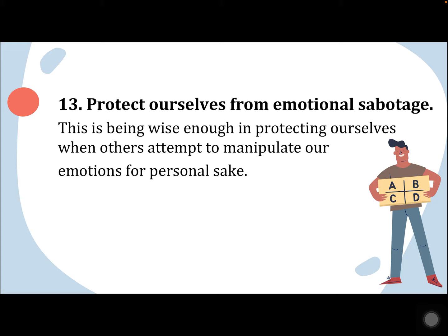The thirteenth and last strategy is to protect ourselves from emotional sabotage — being wise enough in protecting ourselves when others attempt to manipulate our emotions for personal gain. For example, when we feel that someone has been excessively or wrongly controlling our actions, feelings, and decisions, stop it in any right but subtle and courteous way possible. Approach that person calmly and talk to them. These are the strategies to improve our emotional intelligence.